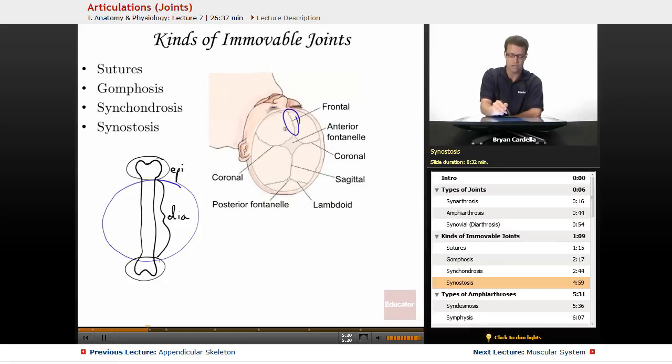So this fuses very early on, and you could call that a synostosis. The other sutures that are more visible in an adult, slightly different.